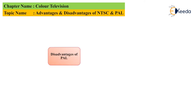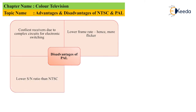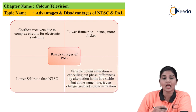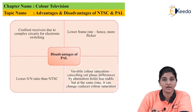Now let's move on to the disadvantages of the PAL system. The first disadvantage is that costlier receivers are required because of complex electronic circuitry and switching methods. Then there is a low frame rate and hence flicker occurs in the picture. There is also a lower signal-to-noise ratio as compared to NTSC, and variable color saturation — cancelling out the phase difference by alteration keeps hue stable, but it can change the color saturation. When a phase shift is added into the subcarrier, the hue is stabilized but the color becomes saturated.